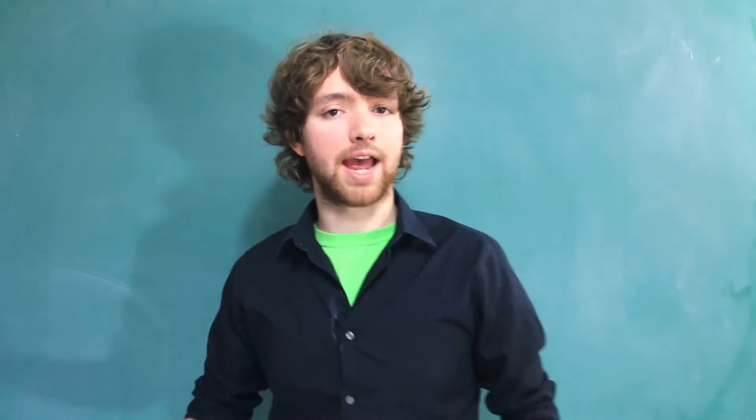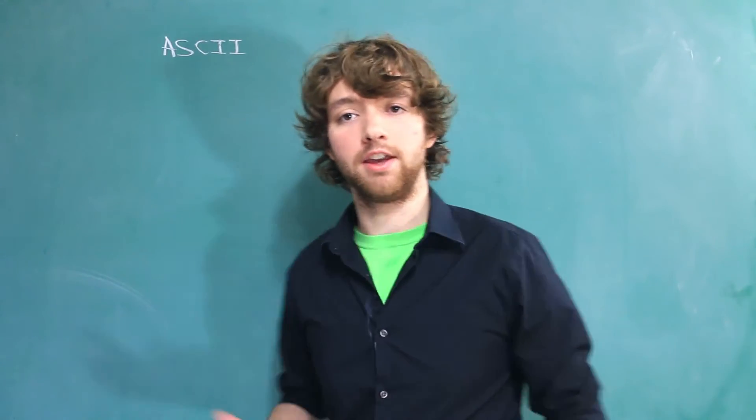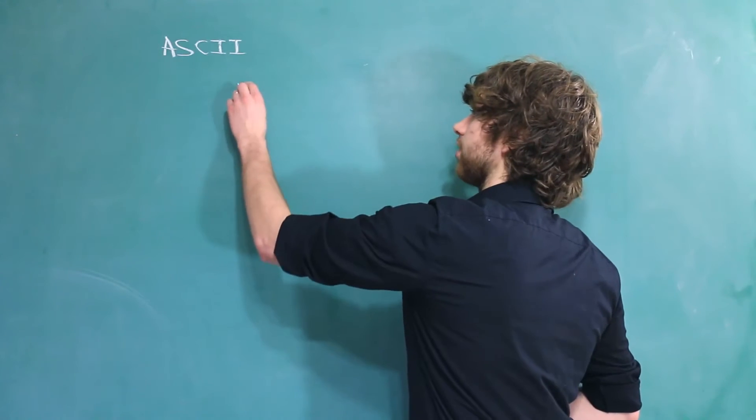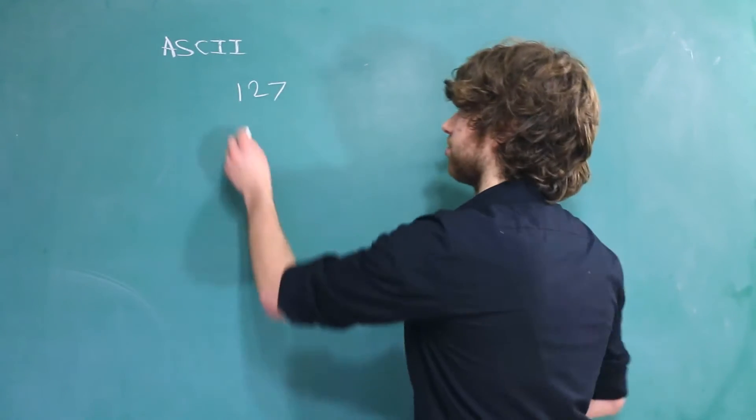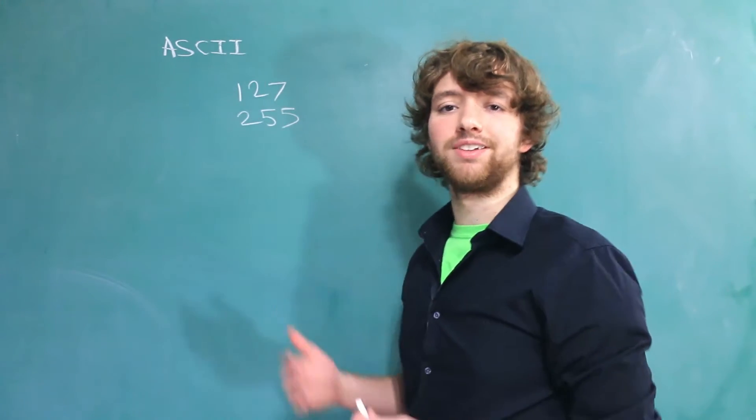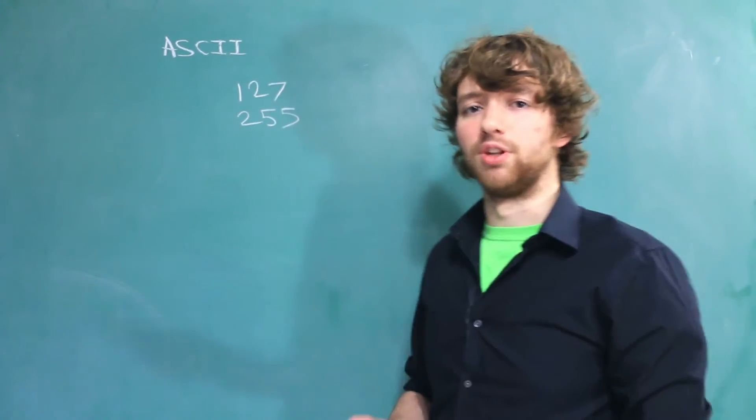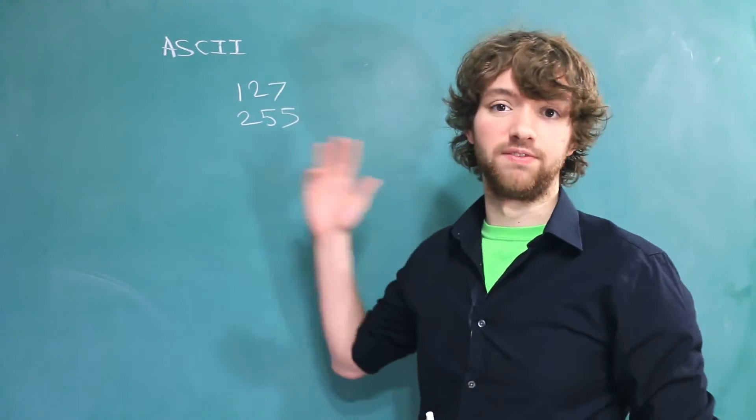One common character set is known as ASCII. ASCII is a very small character set - it started with only 127 characters. They came out with an extended version which is 255 characters, but even so, this is very limiting when you're talking about other languages. You're not going to be able to store all these different languages with only 255 characters.